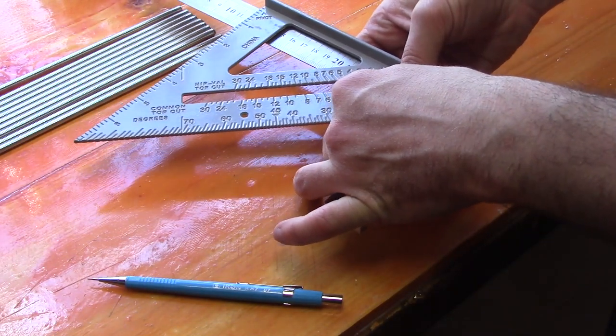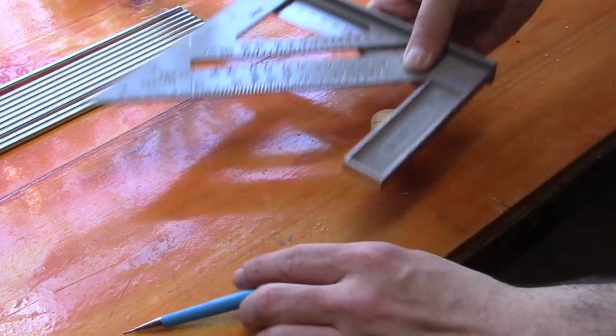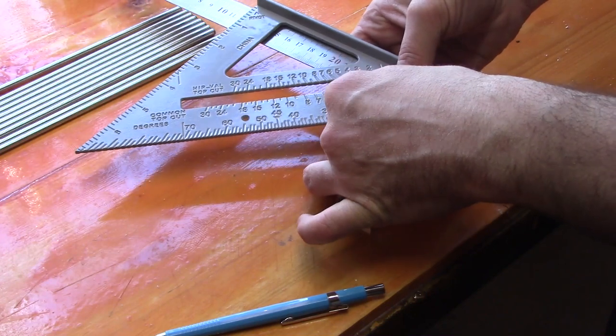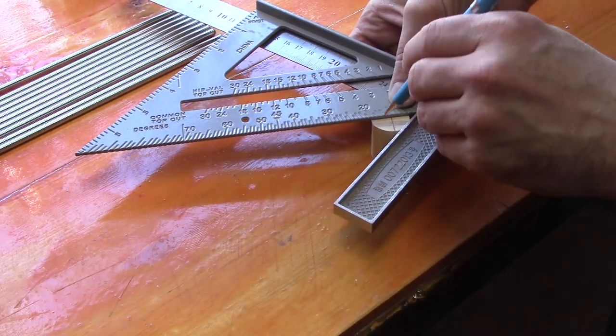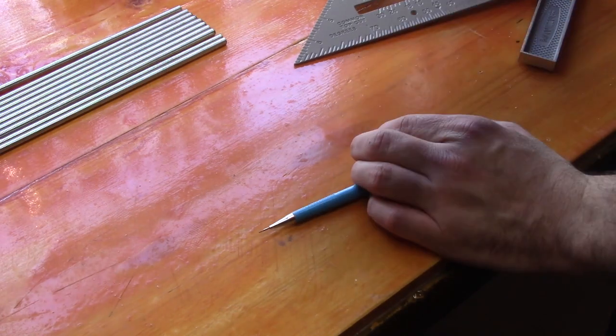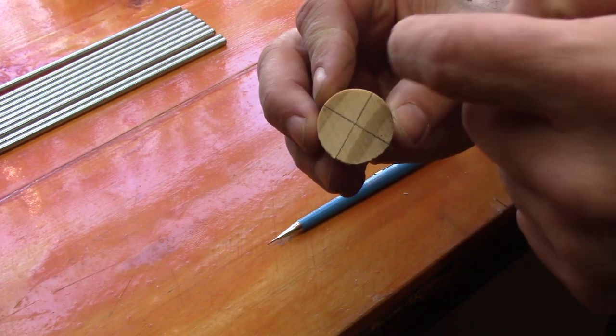We can then put our dowel in line, make sure it's touching and scribe a line. Take it out, twist it, put it back in again and scribe another line. We now have our center and we can use that as our point for when we're drilling down.